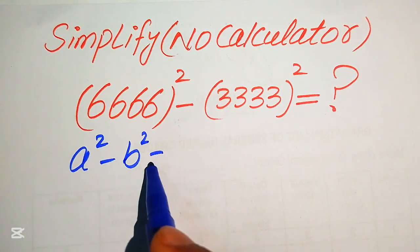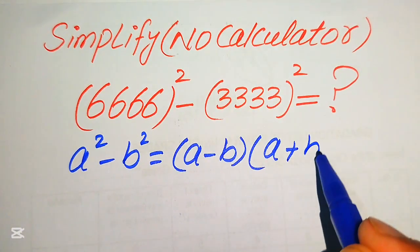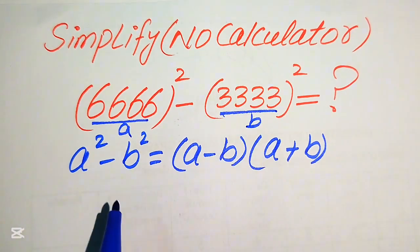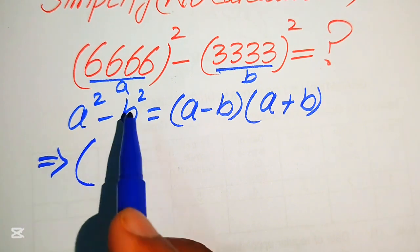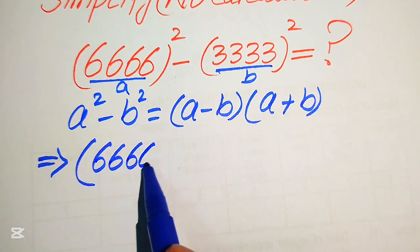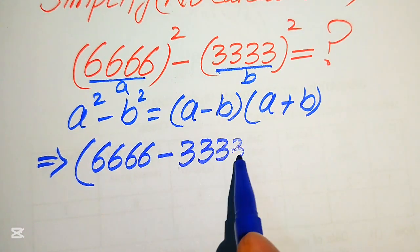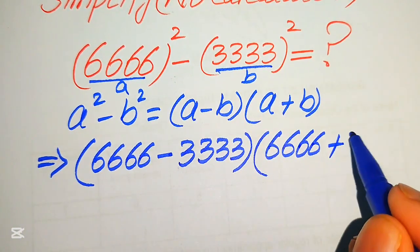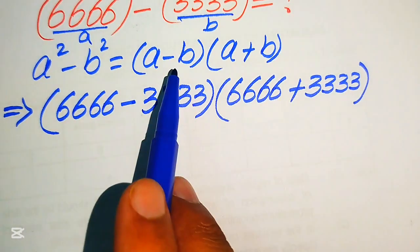We apply the formula: a squared minus b squared equals (a minus b) times (a plus b). Here we call 6666 our 'a' and 3333 our 'b'. So when we apply this formula to the above term, it is written as (a minus b) — the value of a is 6666 minus the value of b which is 3333.